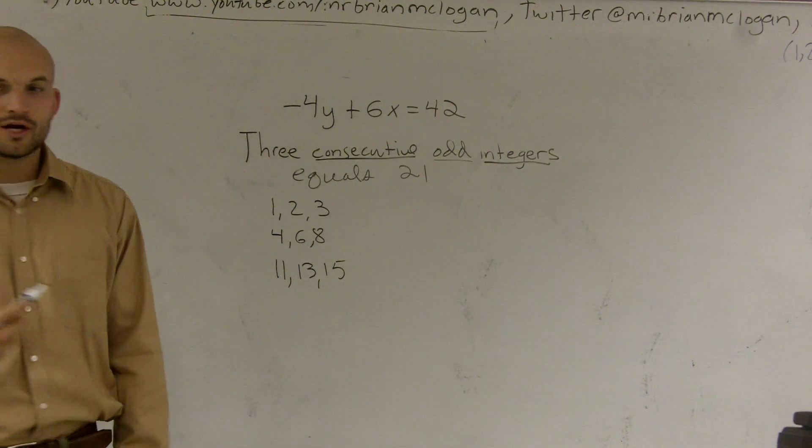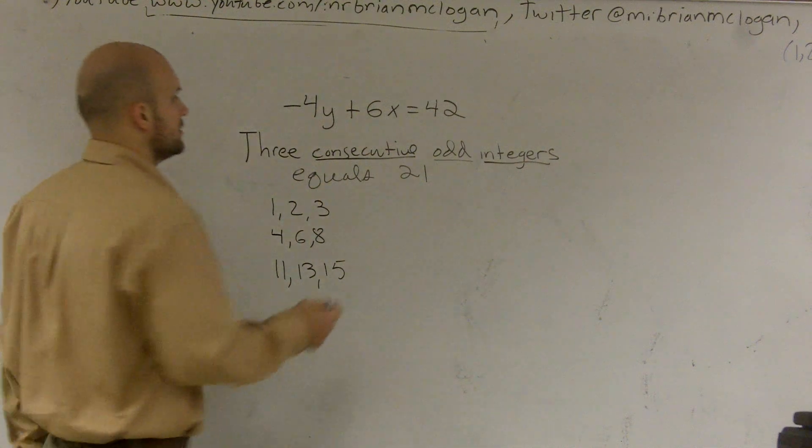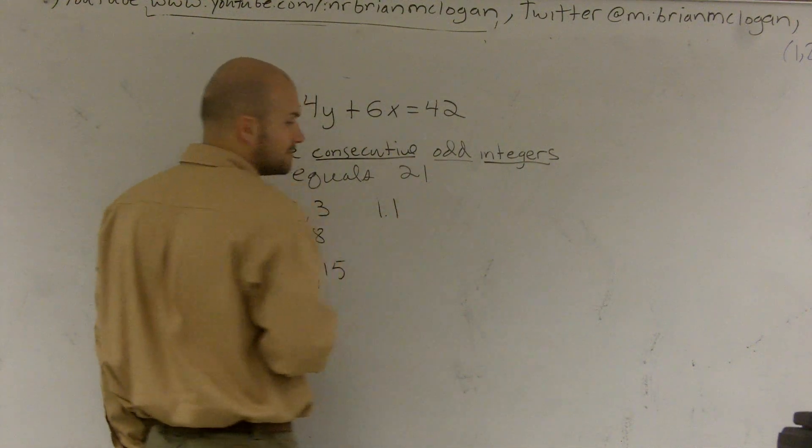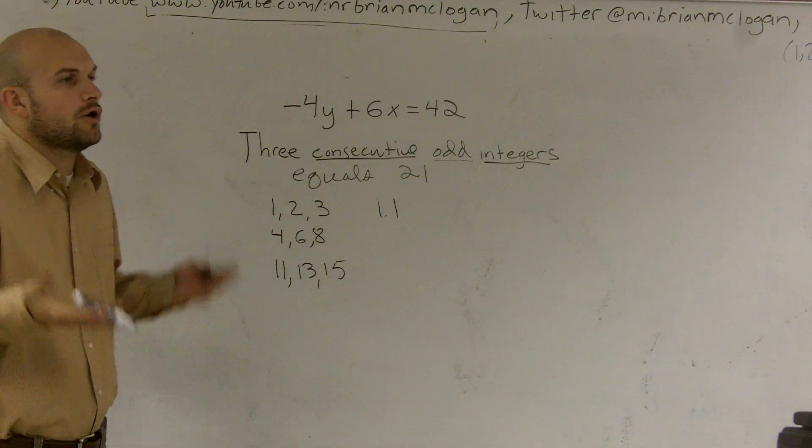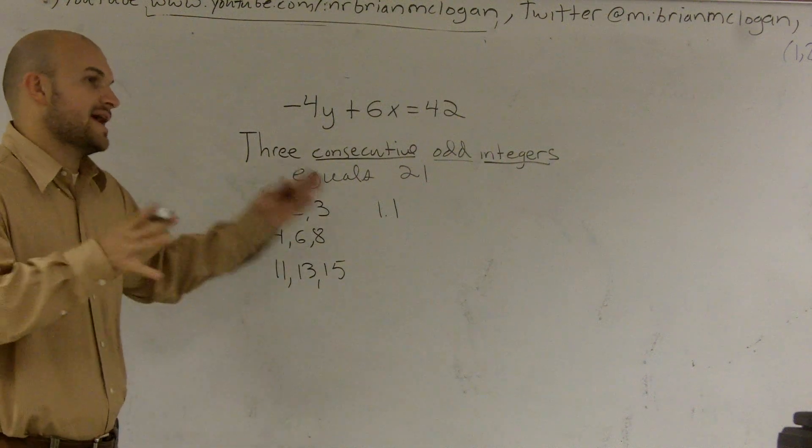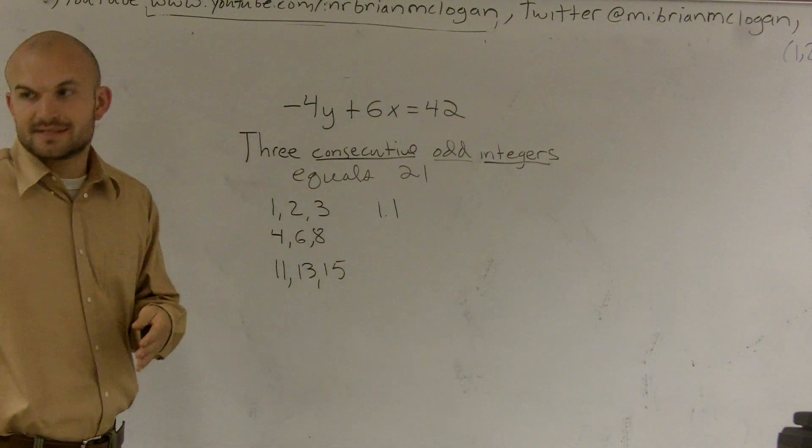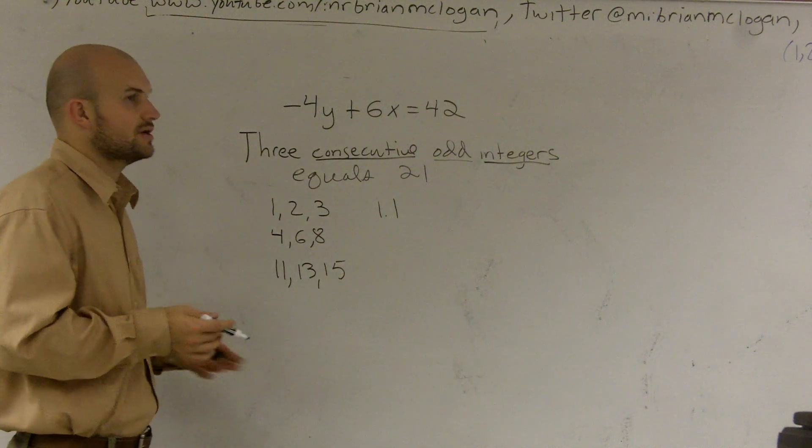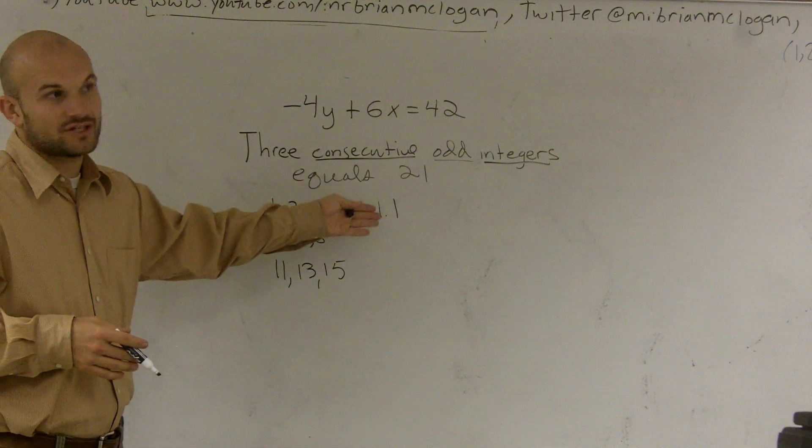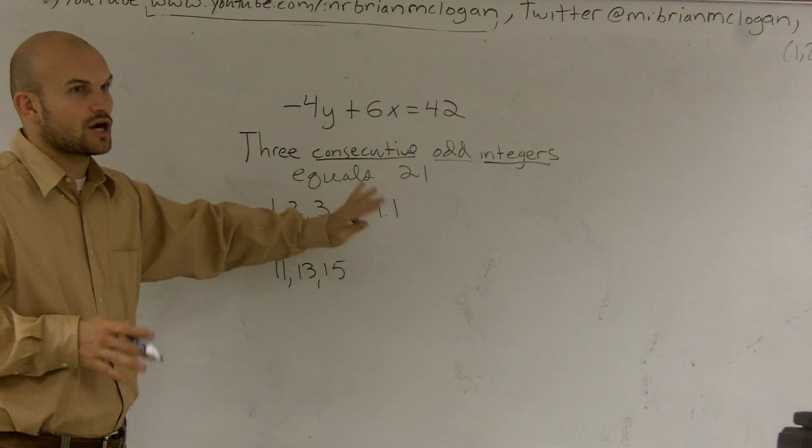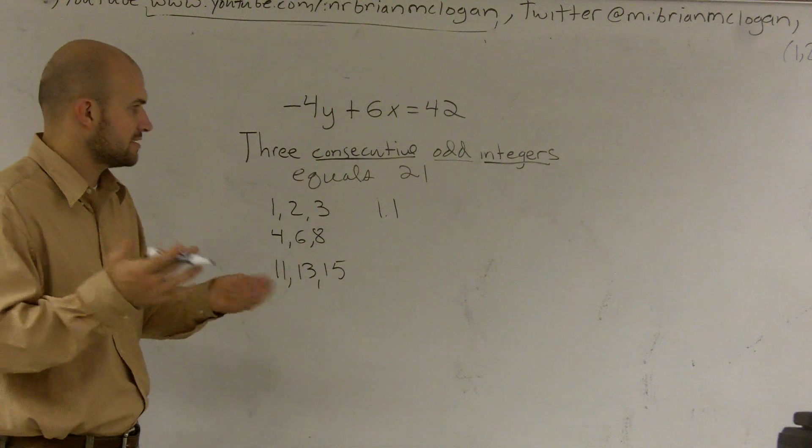The next thing we need to talk about are integers. Why couldn't we use 1.1 or something? Well, integers are pretty much what we call whole numbers. Negative 5 is an integer, 10 is an integer, 100 is an integer. But fractions nor decimals are integers. They're all whole numbers, positive or negative.